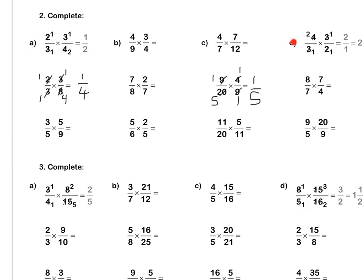Question D. We've divided by 3 and 3. Then we divide the 4 and the 2 by 2 to get 2 and 1. We multiply out to get 2 over 1, which is 2 wholes. Press pause to complete question D by yourself.